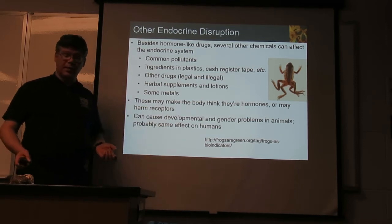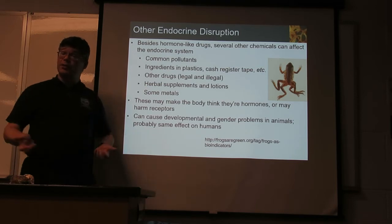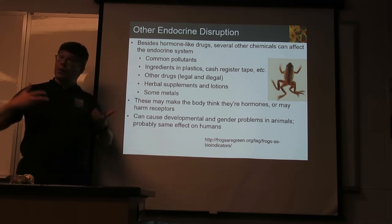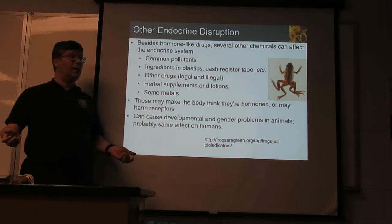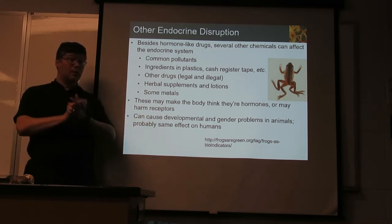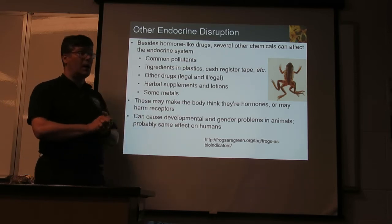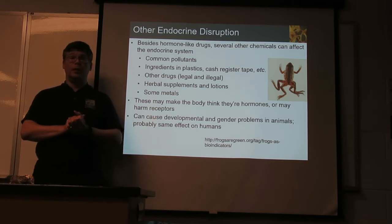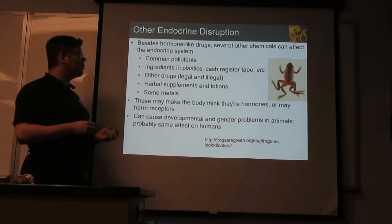Besides things that obviously connect to hormones, there are several other chemicals that can potentially affect the endocrine system. A number of chemicals occur commonly as pollution. There are some that are used very extensively in making plastics. Your standard cash register tape contains bisphenol A — that's a significant endocrine disruptor.